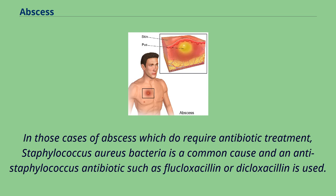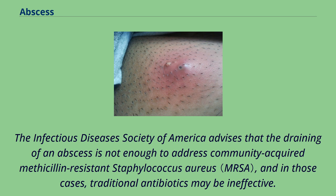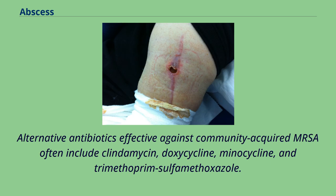In those cases of abscess which do require antibiotic treatment, Staphylococcus aureus bacteria is a common cause and an anti-staphylococcus antibiotic such as flucloxacillin or dicloxacillin is used. The Infectious Diseases Society of America advises that the draining of an abscess is not enough to address community-acquired methicillin-resistant Staphylococcus aureus, and in those cases, traditional antibiotics may be ineffective. Alternative antibiotics effective against community-acquired MRSA often include clindamycin, doxycycline, minocycline, and trimethoprim-sulfamethoxazole.